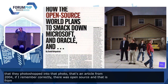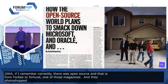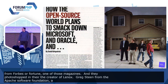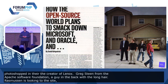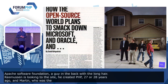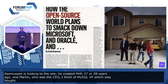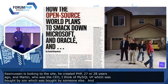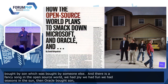They photoshopped Linus Torvalds in there, creator of Linux. Greg Steen from the Apache Software Foundation, the guy in the back with the long hair. Rasmus, who's looking to the side — he created PHP some 27, 28 years ago. And Martin Mikosh, who was the CEO at the time of MySQL AB, which was later bought by Sun, which was later bought by Oracle. There's this saying in the open source world: we had joy, we had fun, we had seasons in the sun, and then Oracle bought Sun.